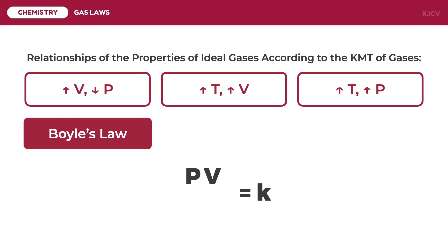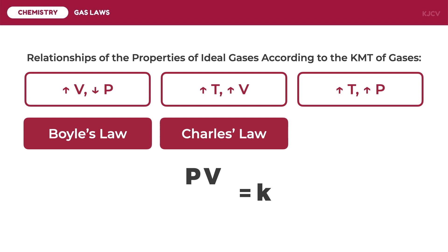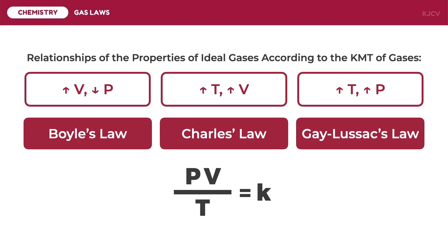The direct relationship between temperature and volume is stated by Charles' law, mathematically expressed as the ratio of volume to temperature is constant. The direct relationship between temperature and pressure is stated by Gay-Lussac's law, which is mathematically written as the ratio of pressure to temperature is constant.